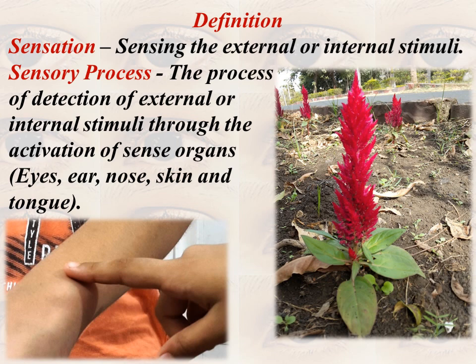We will discuss two important things: sensation and sensory process. Sensation means sensing the external or internal stimuli. Sensory process is the process of detection of external or internal stimuli through the activation of sense organs — your eyes, ears, nose, skin, and tongue. These are activated by external as well as internal stimuli, and that activation process is known as the sensory process.